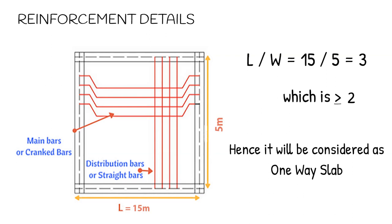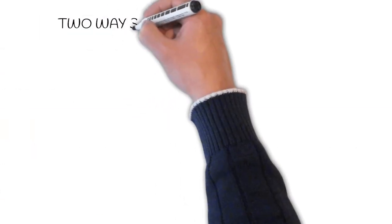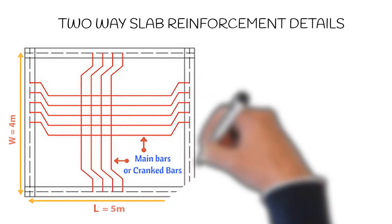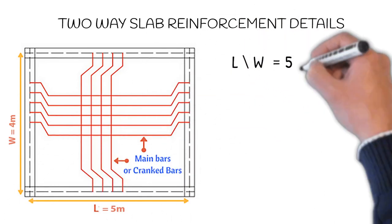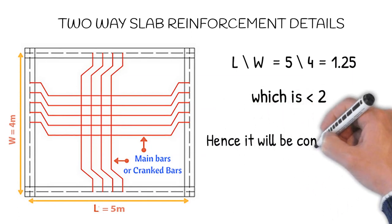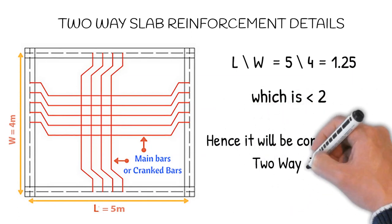Two-way slab reinforcement details: From the figure, it is clear that L/W equals 5 by 4, that is 1.25. Hence two-way slab is adopted where cranked bars are provided on both sides of the slab.